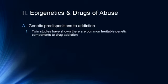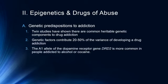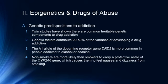Starting with genetic predispositions to addiction: twin studies have shown that there are common heritable components to drug addiction. Genetic factors contribute to 25 to 50 percent of the variance in developing a drug addiction. The A1 allele of the dopamine receptor gene DRD2 is more common in people addicted to alcohol or cocaine. Non-smokers are more likely than smokers to carry a protective allele of the cytochrome P2A6 gene, which causes nausea and dizziness from smoking. Estimates suggest 20 to 50 percent of the chance of developing drug addiction appears to be genetic.